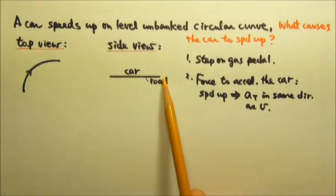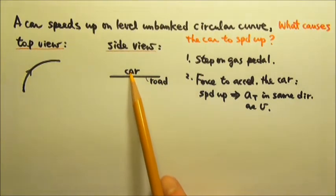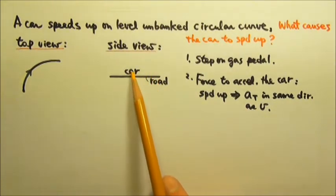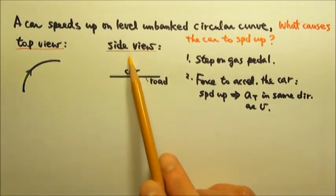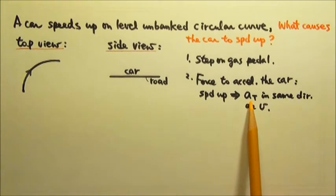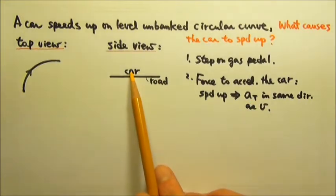Since the car is on a level road, the acceleration to speed up is parallel to the road, which means the mg and normal force cannot provide the tangential acceleration that's horizontal. So only friction can do that.